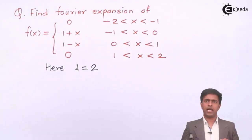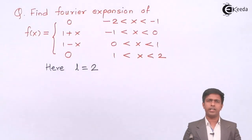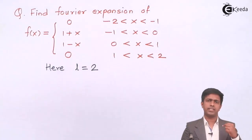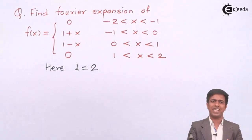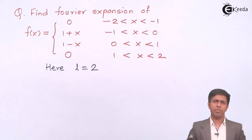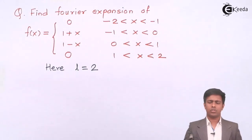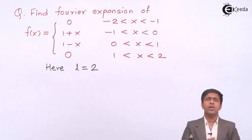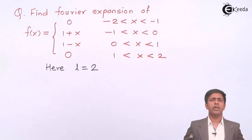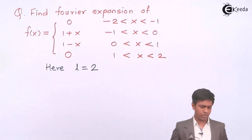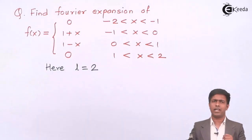Since the range is -l to l, we can use the property of even and odd functions. When integrating over a symmetric interval -a to a, using even or odd symmetry gives the answer in fewer steps. So we'll check whether f(x) is even or odd by substituting x = -x.